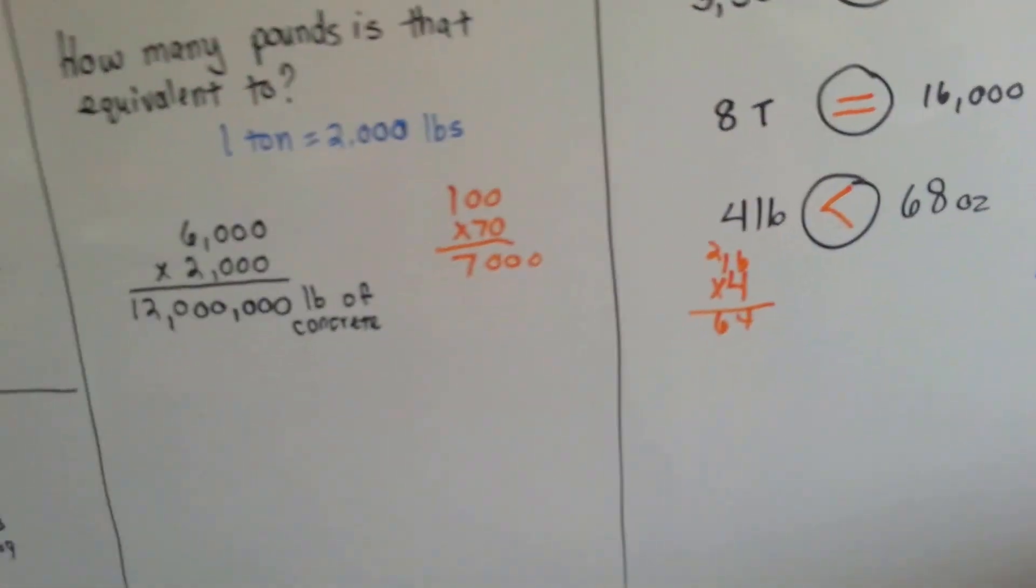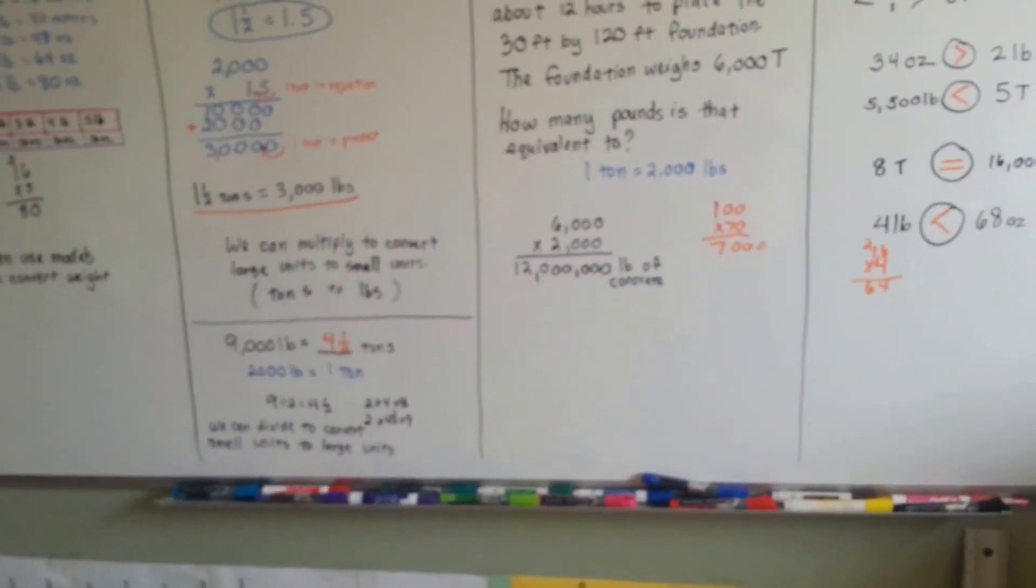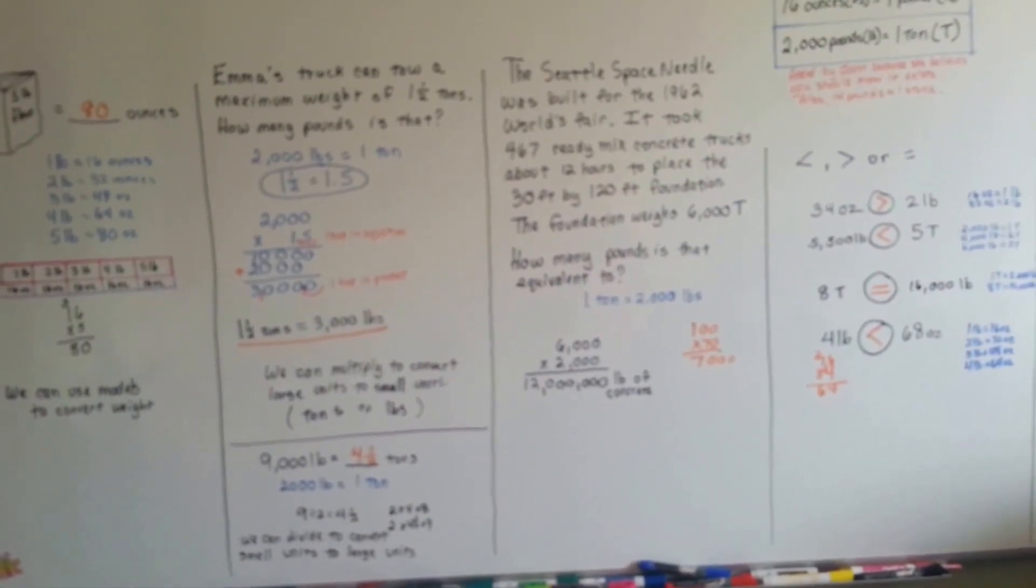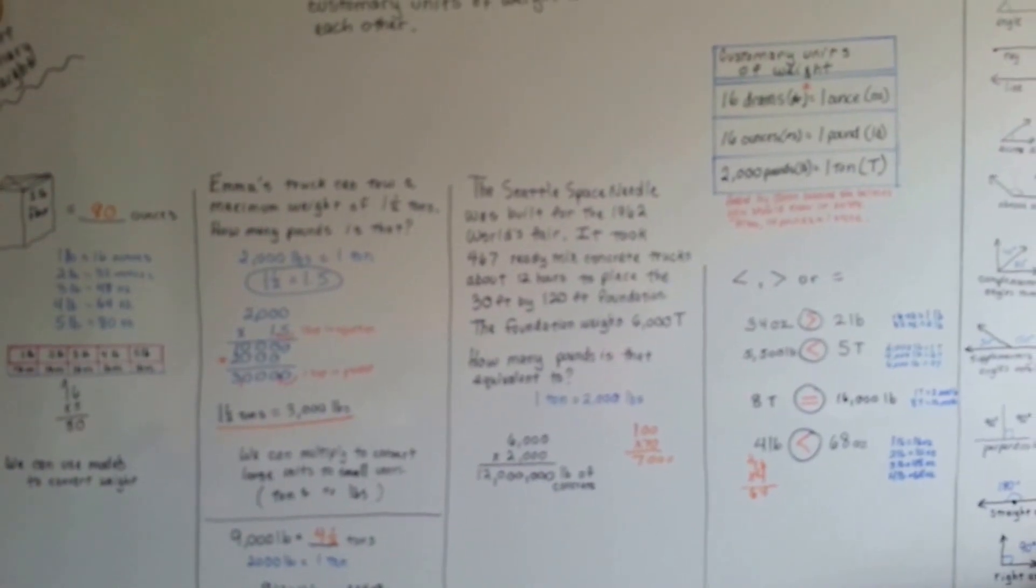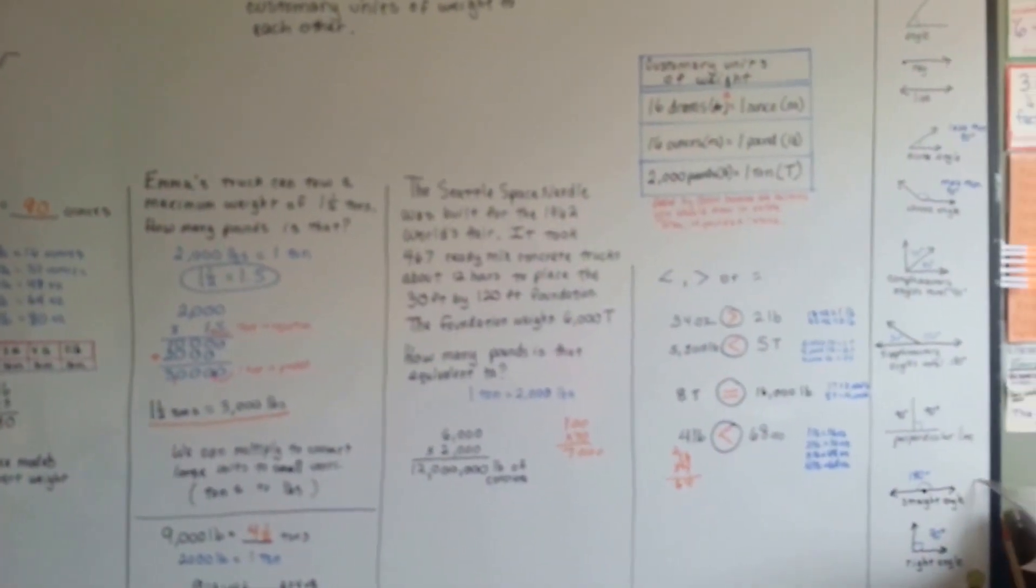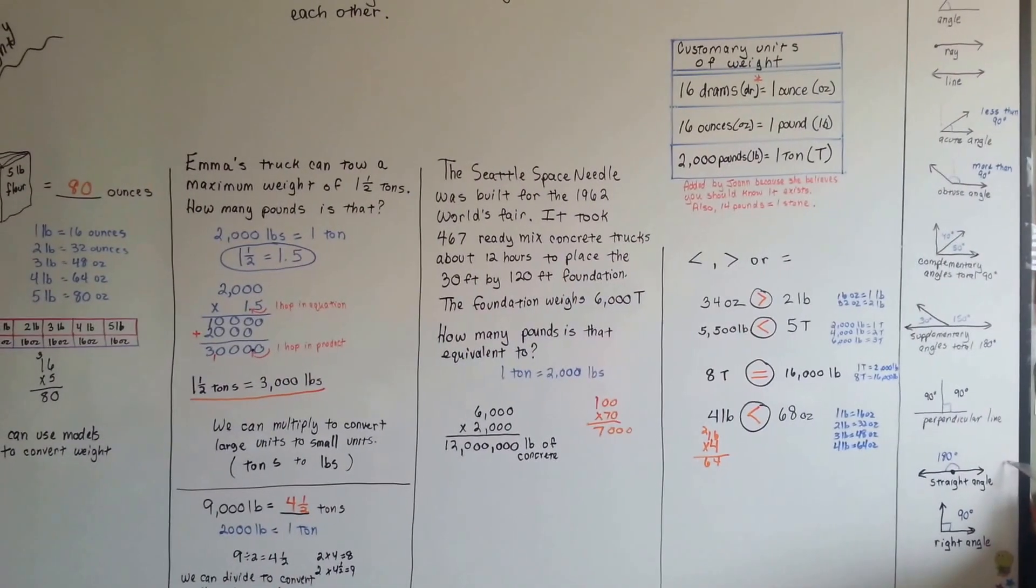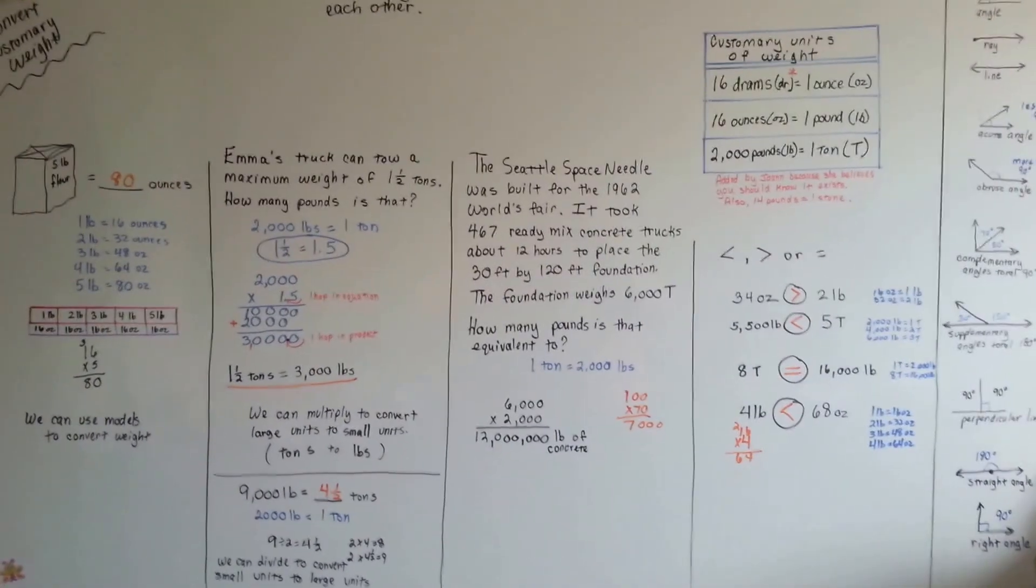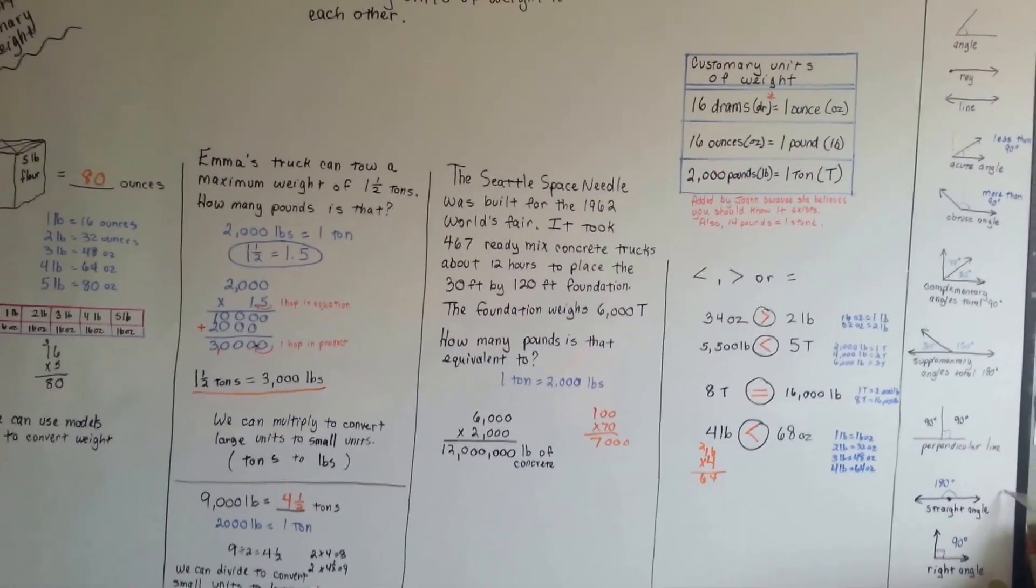So just remember, you can multiply to convert large units, like tons, to small units, like pounds. Or you can divide to convert small units, like pounds, to large units, like tons. Alright? Or you can even try doing it this way and just stacking them to find the increments to help you. Alright? Or you could even use models, like we did in the front here. Alright?